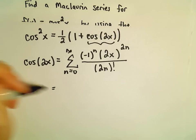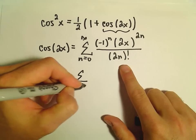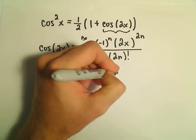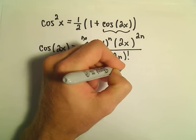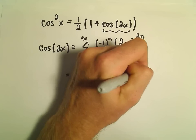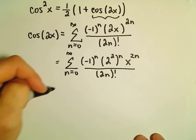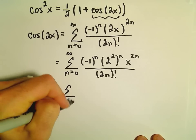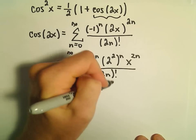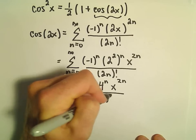Let's simplify this a little bit. This is the sum from n equals 0 to infinity of negative 1 to the n. We can write 2 to the 2n as 2 squared raised to the n, which is 4 to the n. So we have 4 to the n times x to the 2n, all over 2n factorial.